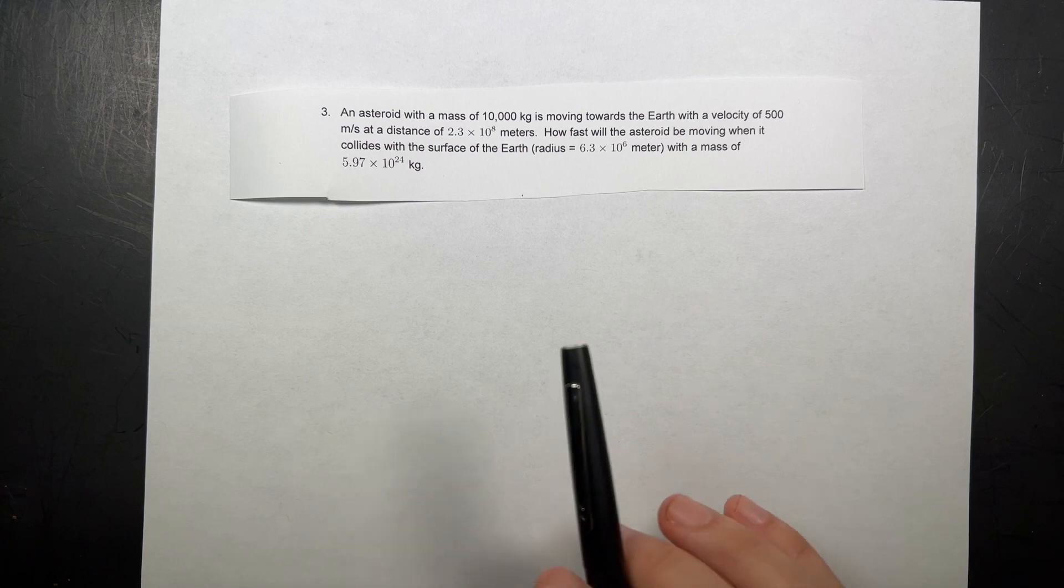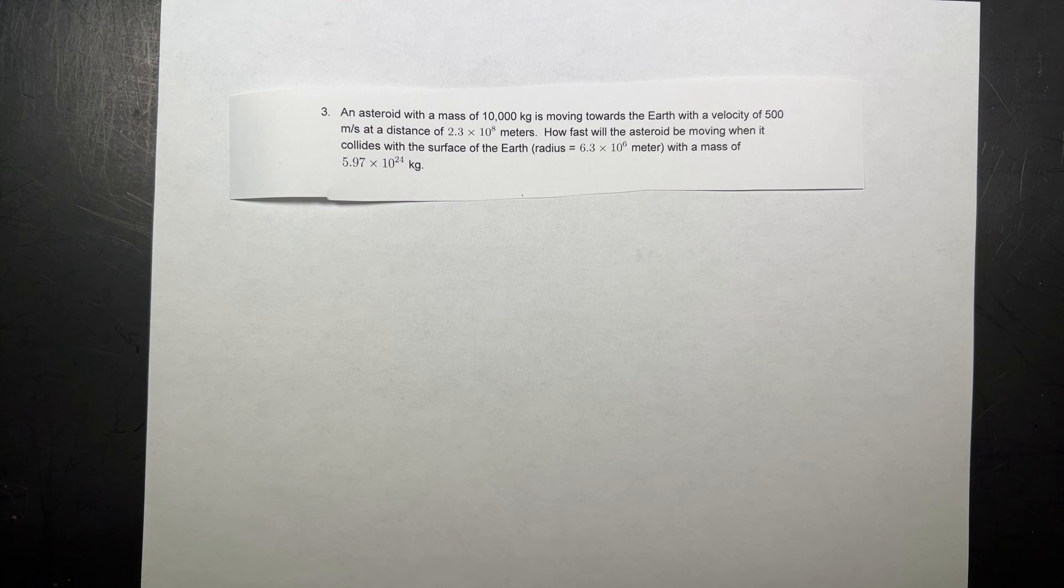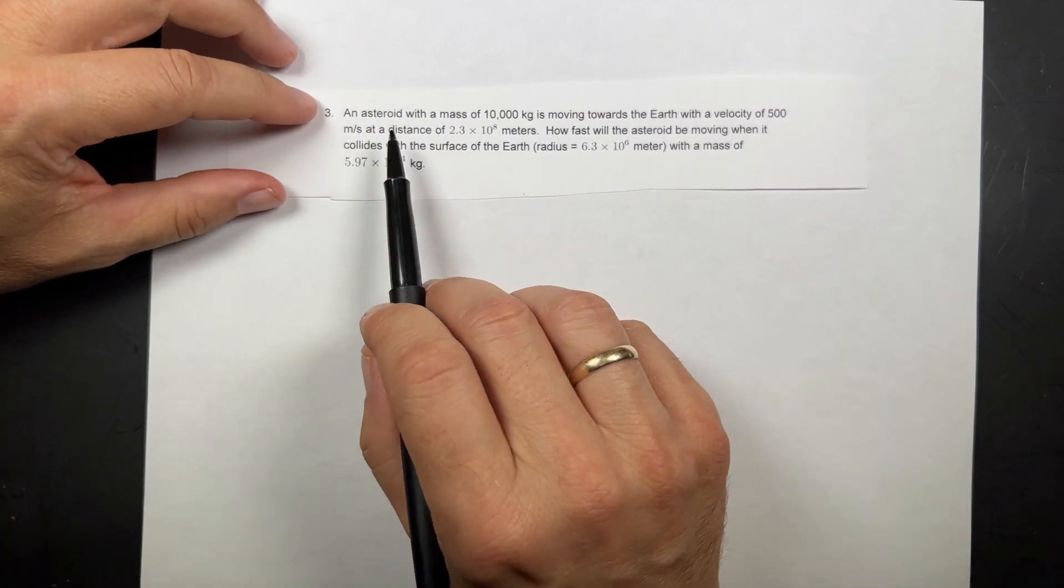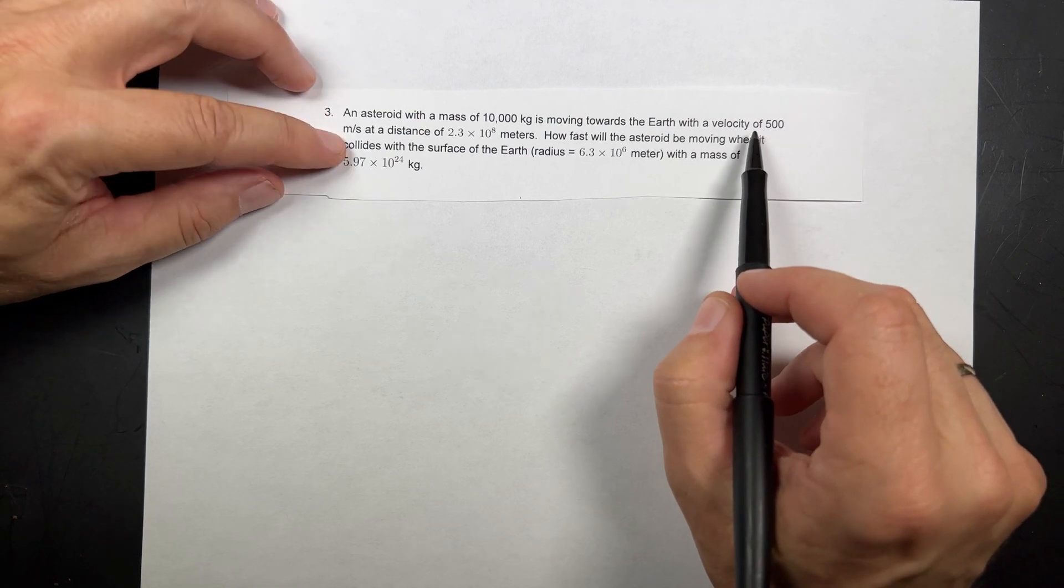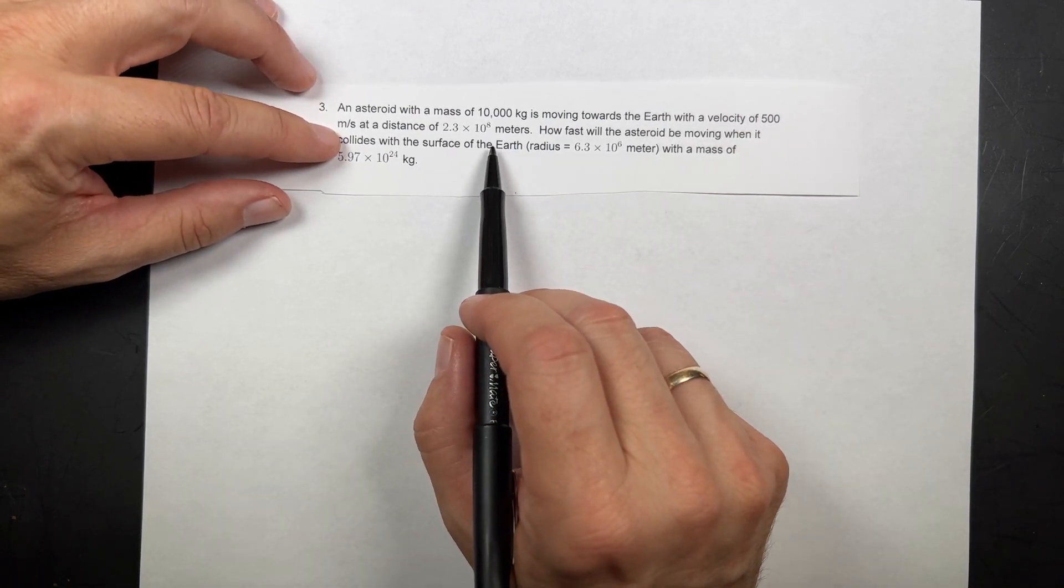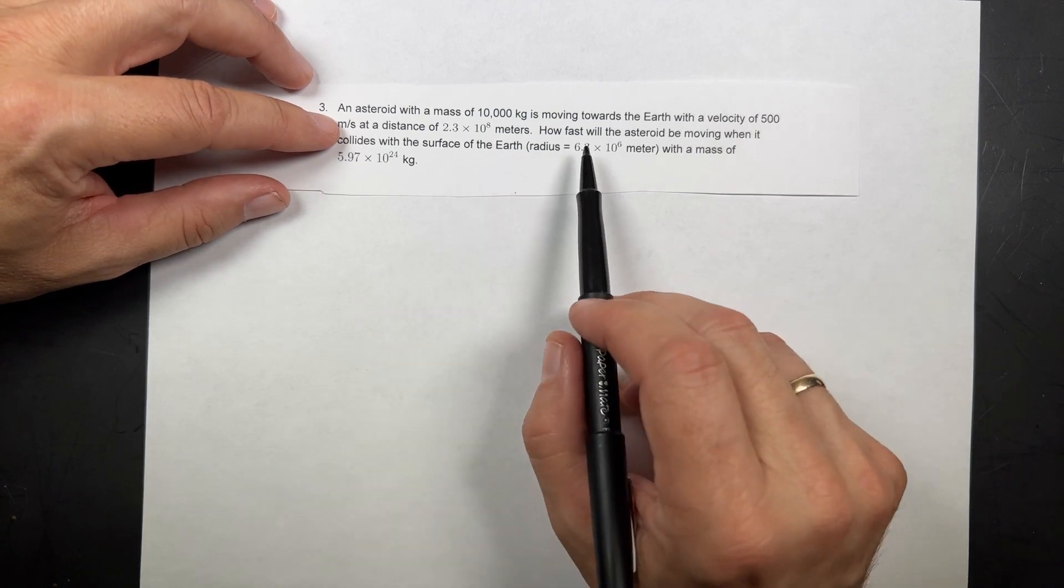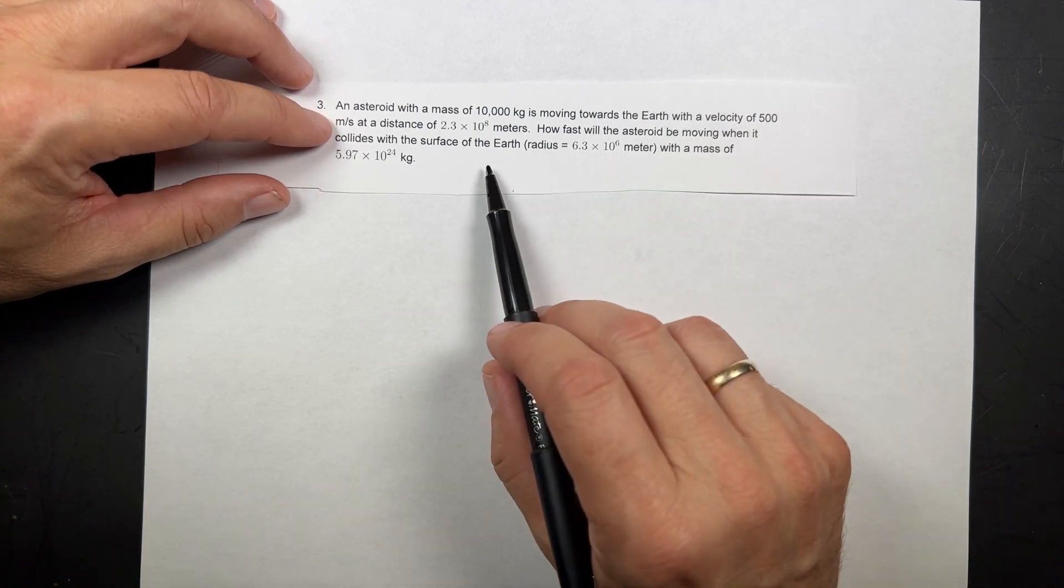Here is another work energy practice problem. I printed it out kind of small, so let me read it to you. An asteroid with a mass of 10,000 kilograms moving towards the Earth with a velocity of 500 meters per second, a distance of 2.3 times 10 to the eighth meters from the center of the Earth. How fast will the asteroid be moving when it collides with the surface?